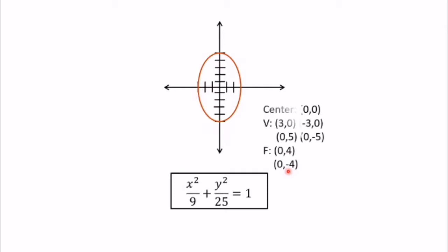Para mas madali nyo ding ma-visualize yung ating example dito — ito lang din yung given natin kanina. So yung center nya ay 0, 0. Yung vertex nya ay 3, 0 and negative 3, 0. And 0, 5 and 0, negative 5. The square root of 9 is 3, so yung vertices natin ay 3, 0 and negative 3, 0. And pag kinuha mo yung square root ng 25, it will give you 5 — so it is 0, 5 and 0, negative 5.